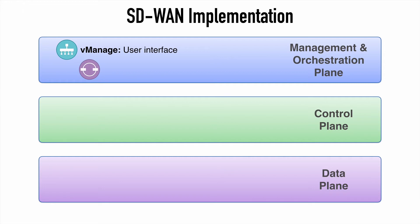Then there's Cisco's VBond, which controls the orchestration plane. It's the job of VBond to understand how the network is constructed and to make sure all of the interconnected components can work together. One of the big capabilities here is something called zero-touch provisioning. This means that when an SD-WAN-capable router is introduced into the network, Cisco's VBond can remotely provision the router from anywhere without the need for an administrator to take any action at all. So that's super helpful for us as administrators.